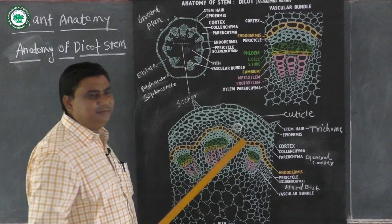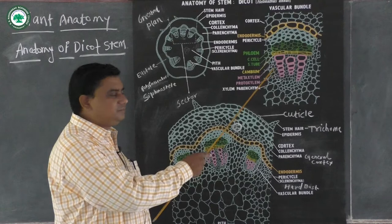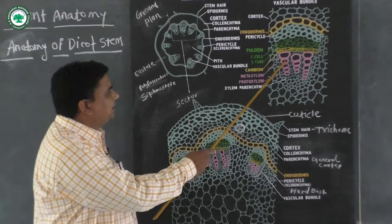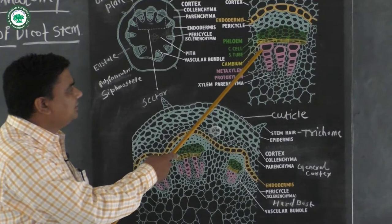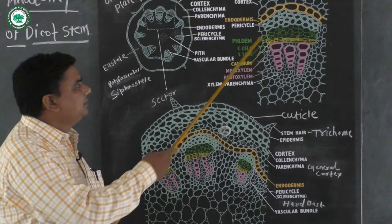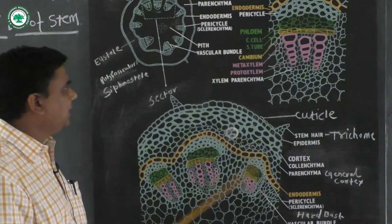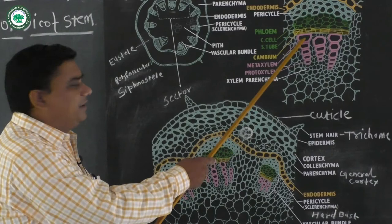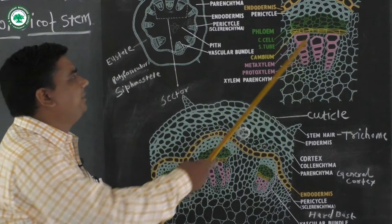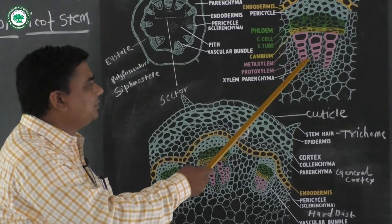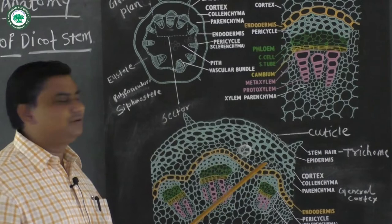In the case of xylem, xylem is made up from vessels, tracheids, and wood fiber. There are two elements in the case of xylem: the larger element is called the metaxylem and the smaller element is called the protoxylem. When the metaxylem faces toward the periphery or epidermis and the protoxylem faces toward the center or pith region, the vascular bundle is said to be of endarch type.